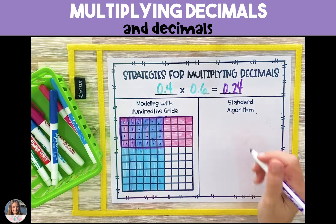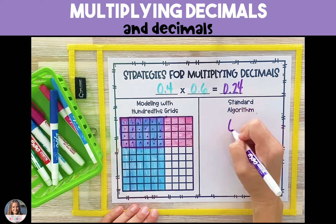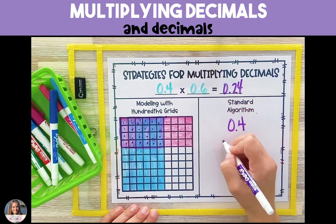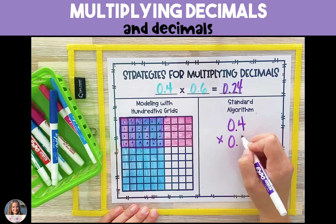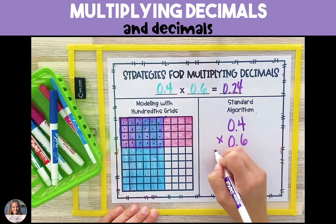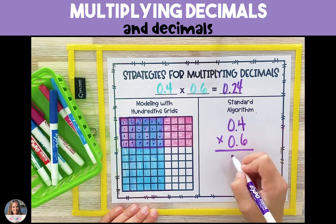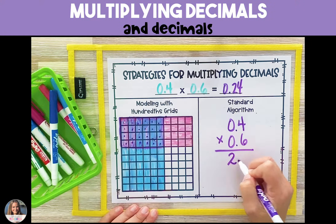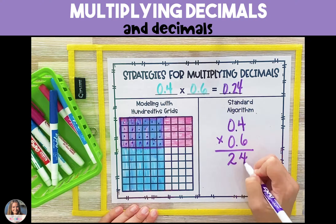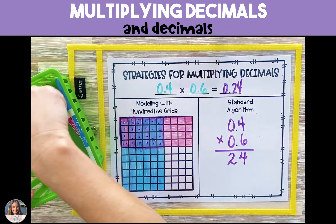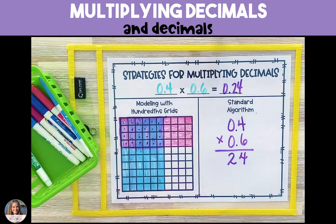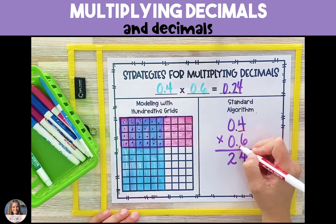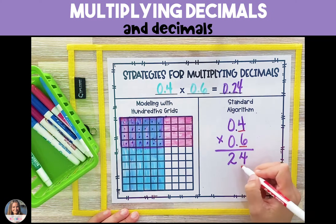For the standard algorithm we're going to set up our problem just like we would with whole numbers. We'll multiply six times four and write our answer of 24, and then we're going to look at each factor in the problem and count how many digits are to the right of a decimal point in both factors.